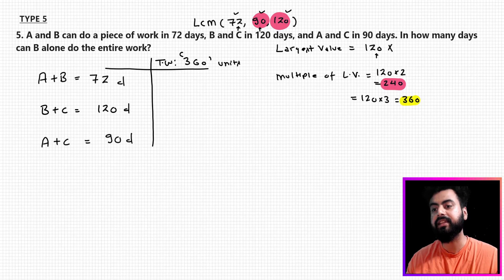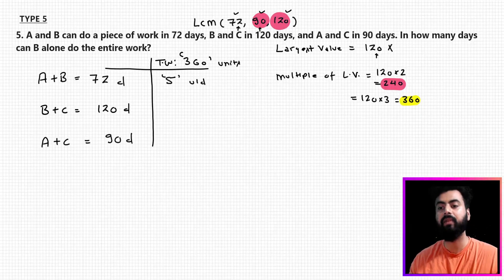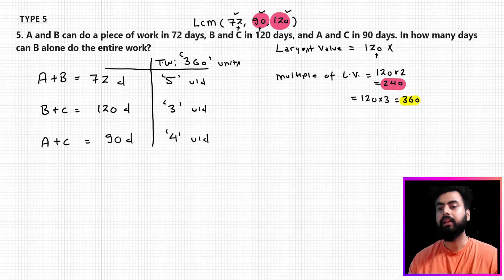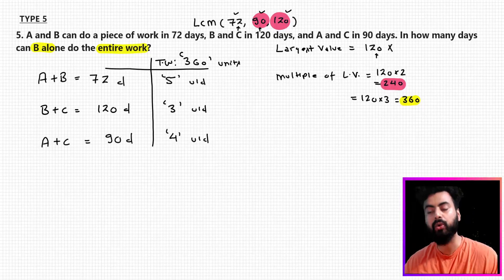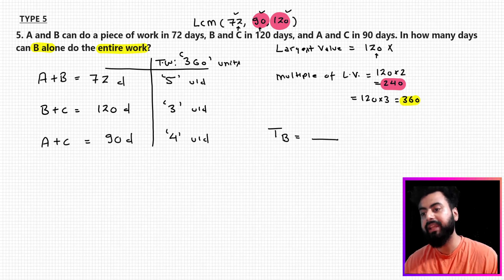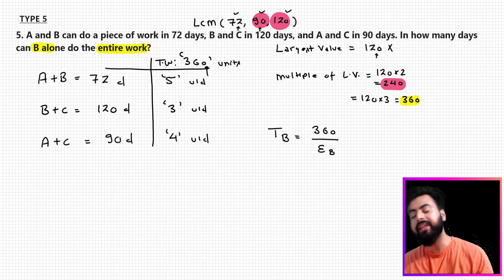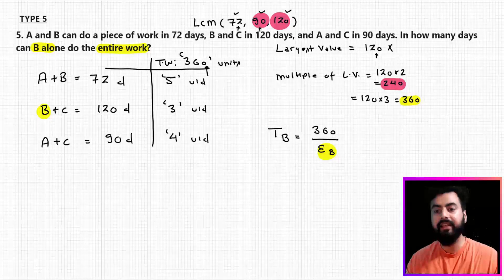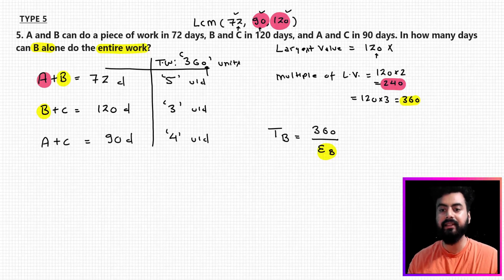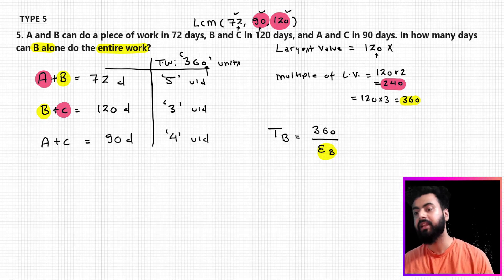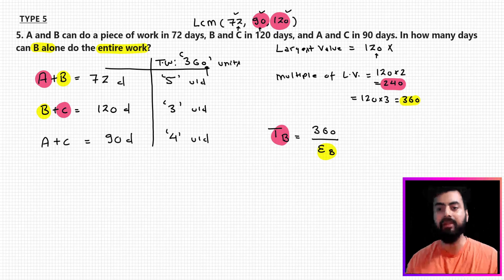So the total work is 360 units. Dividing: 360/72 = 5 (efficiency of A+B), 360/120 = 3 (efficiency of B+C), and 360/90 = 4 (efficiency of A+C). Now the question asks for the time taken by B alone. To answer this, I need the individual efficiency of B — but B's efficiency is always combined with A or C. So I need to find a way to isolate B's individual efficiency.